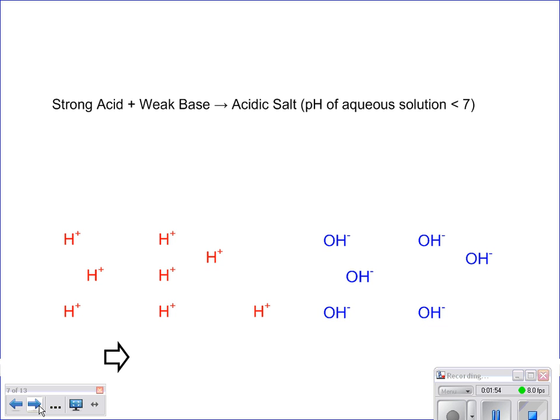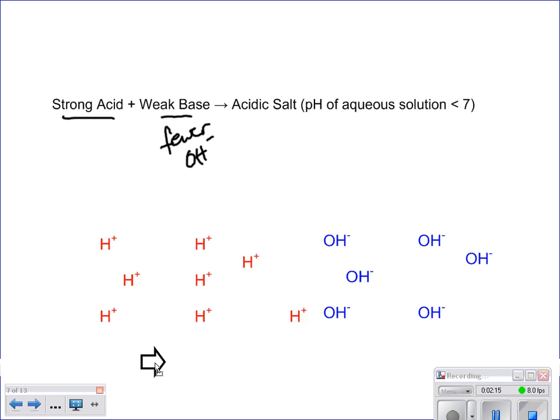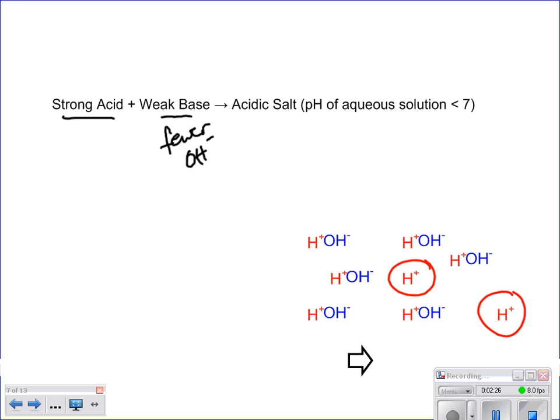But if that's not the case, let's say that you have a strong acid. It all breaks apart into its hydrogen ions and the other anion, and a weak base. It doesn't break apart. You have fewer hydroxide ions because it does not all dissociate or ionize. Because of that, because you have fewer hydroxide ions, when you put it together you see that there are still going to be some leftover, you have extra hydrogen ions there because that ionized completely, but the base did not ionize completely. So it would be more acidic, meaning that the pH would be less than seven.